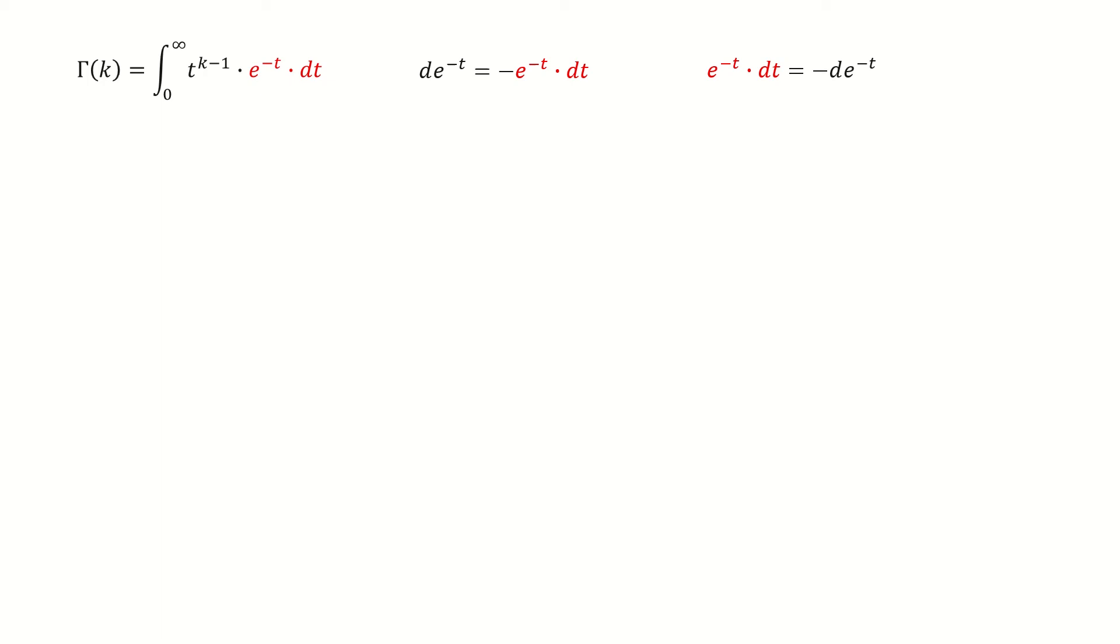Next, we plug in to replace this red term, so we get here. Then we put the negative sign out of the integral. And next, we do the integral by parts.